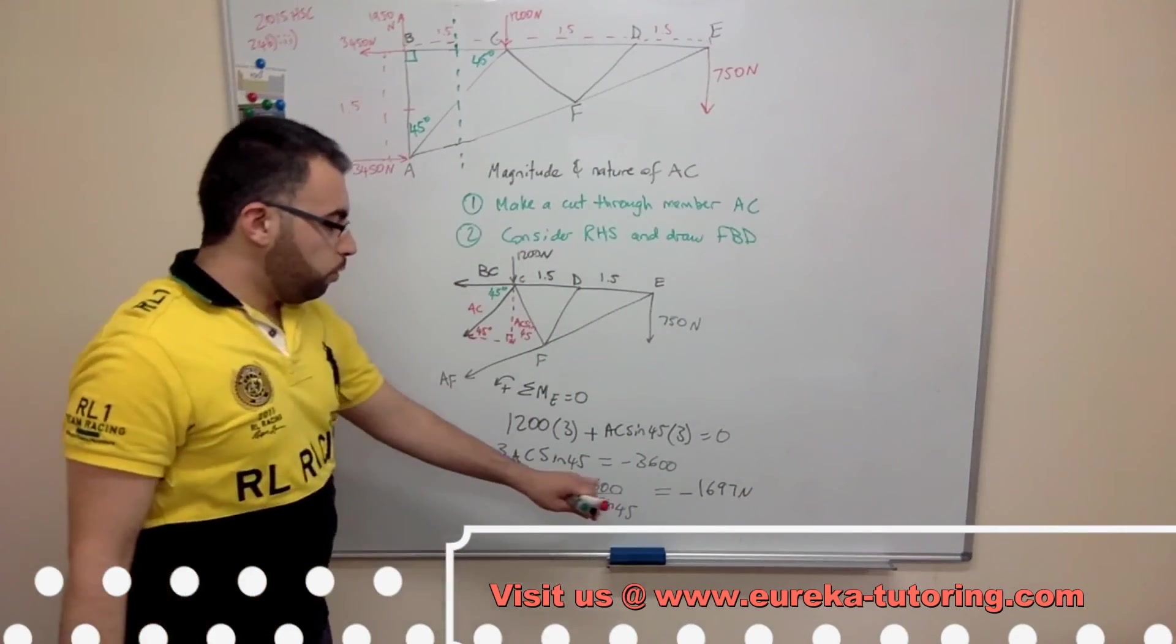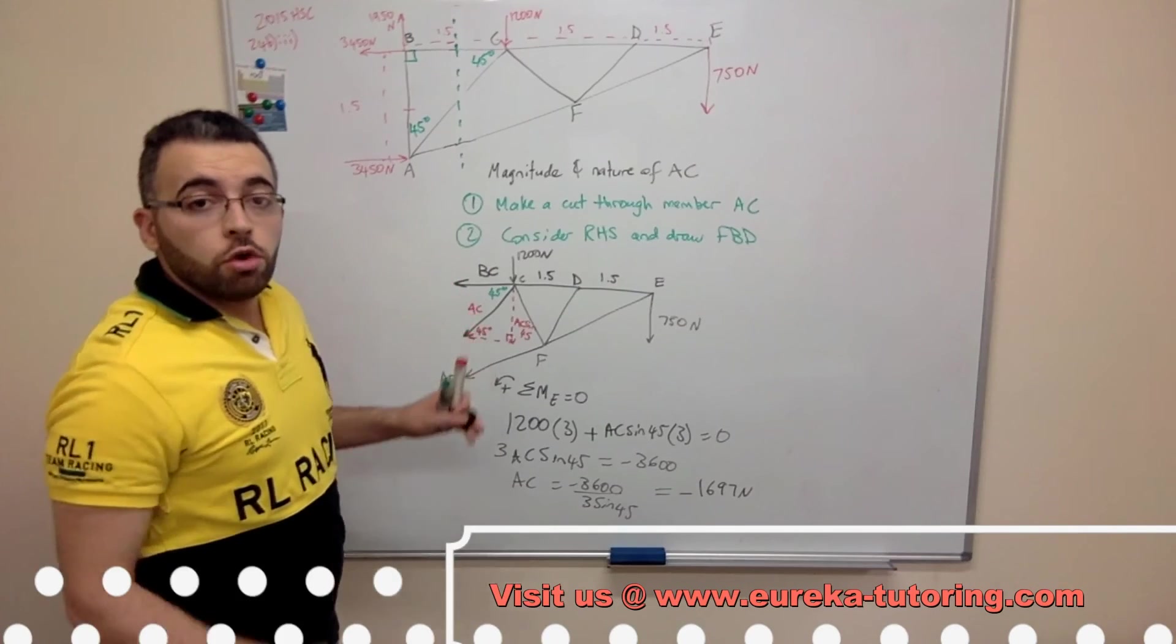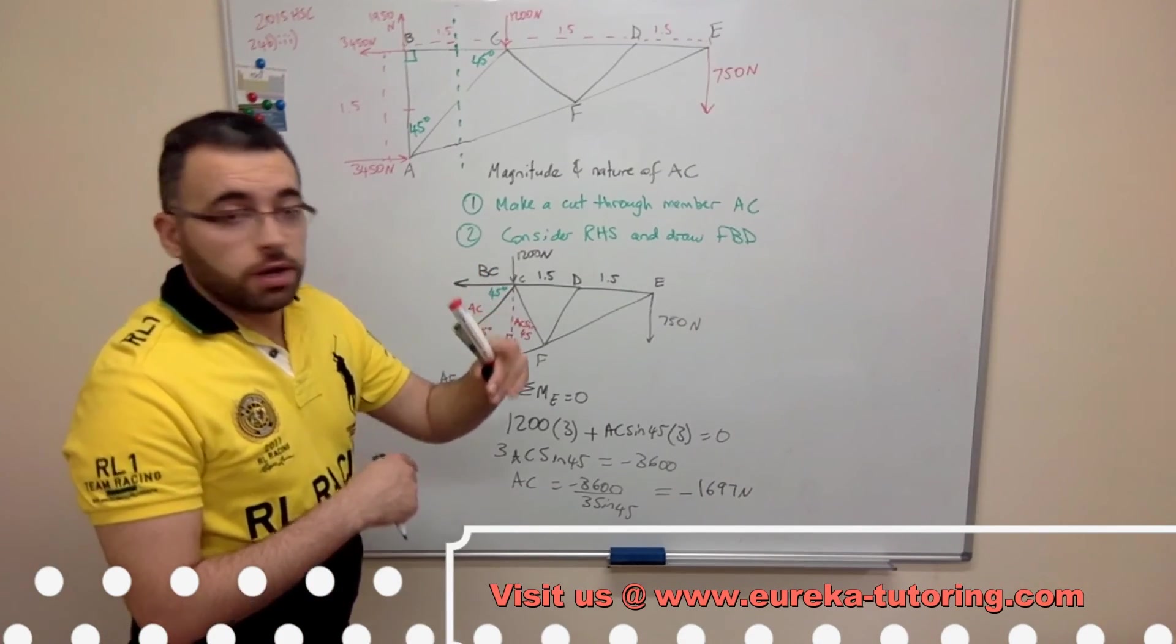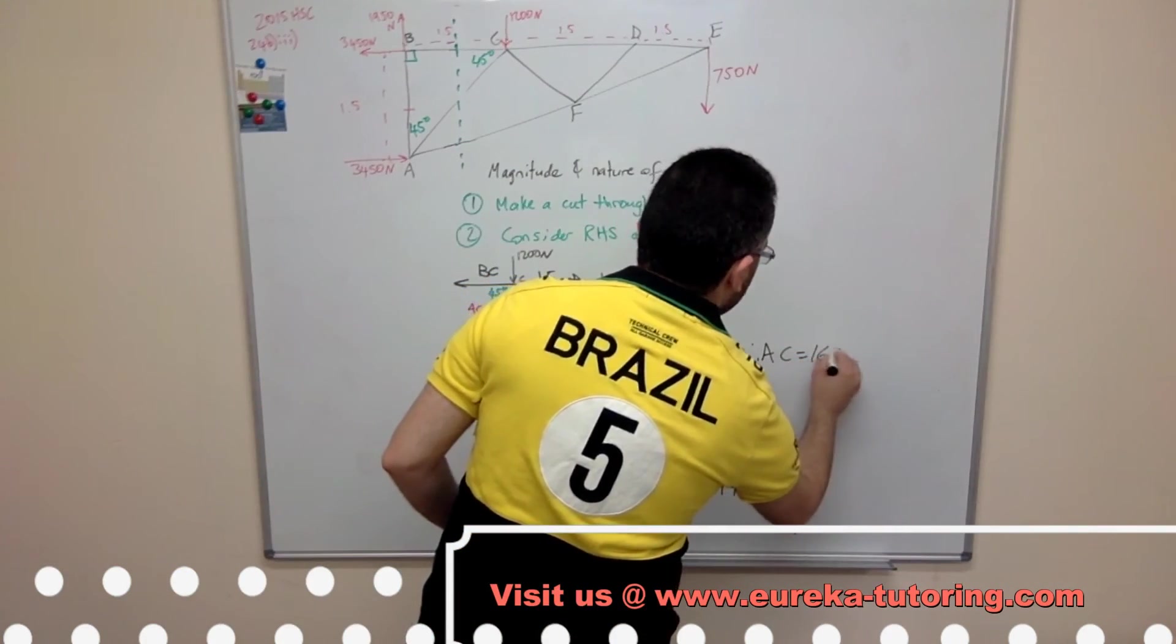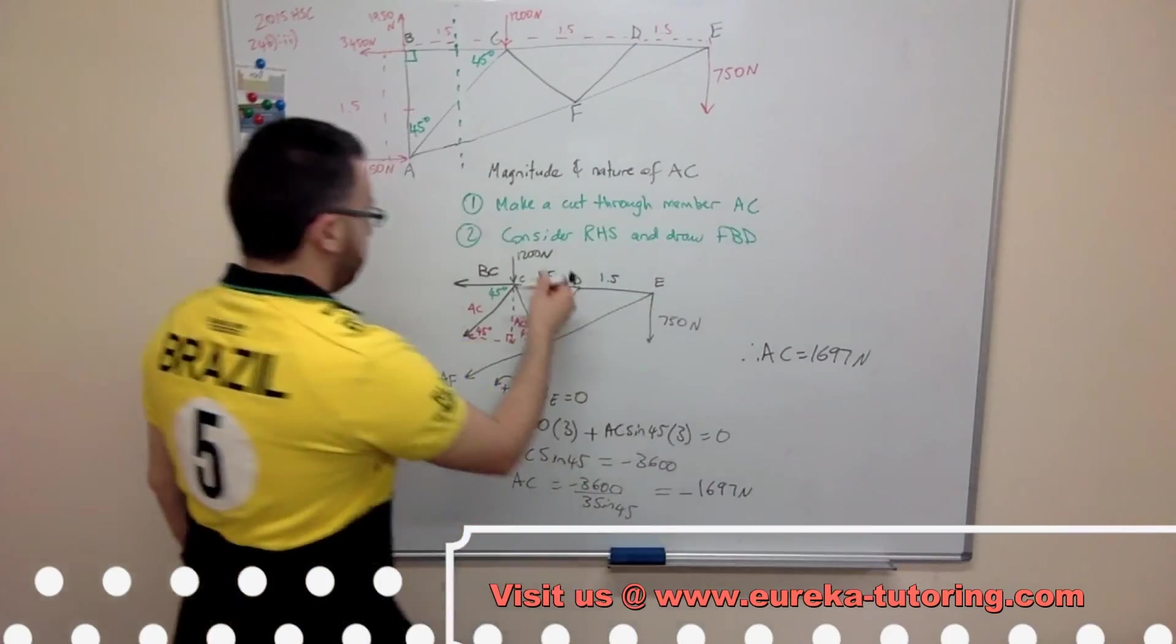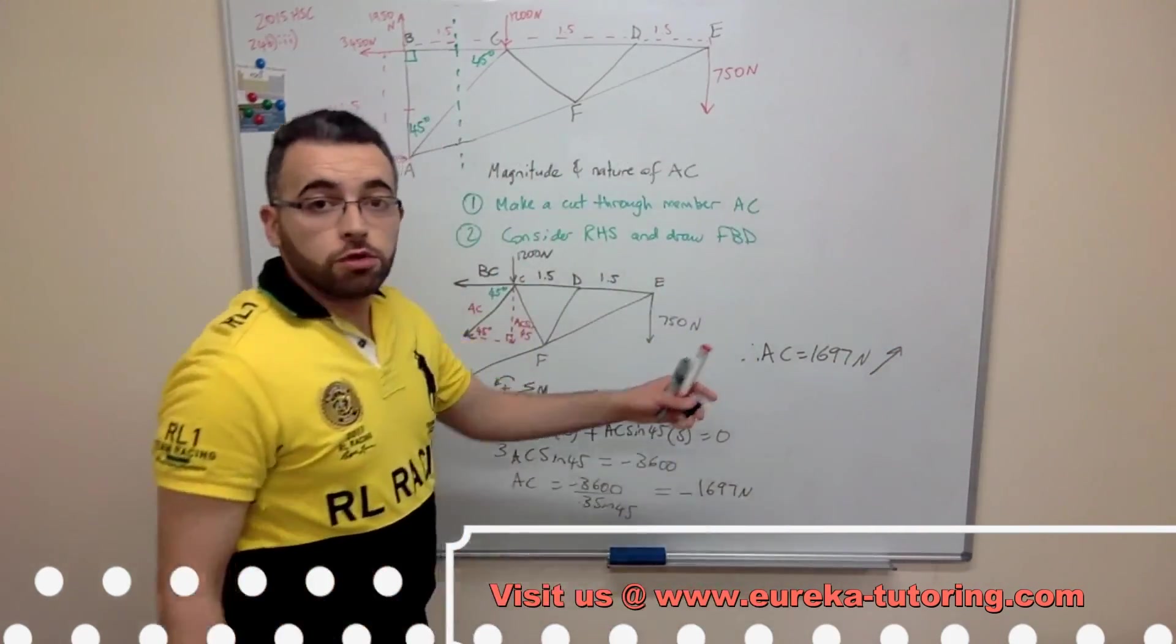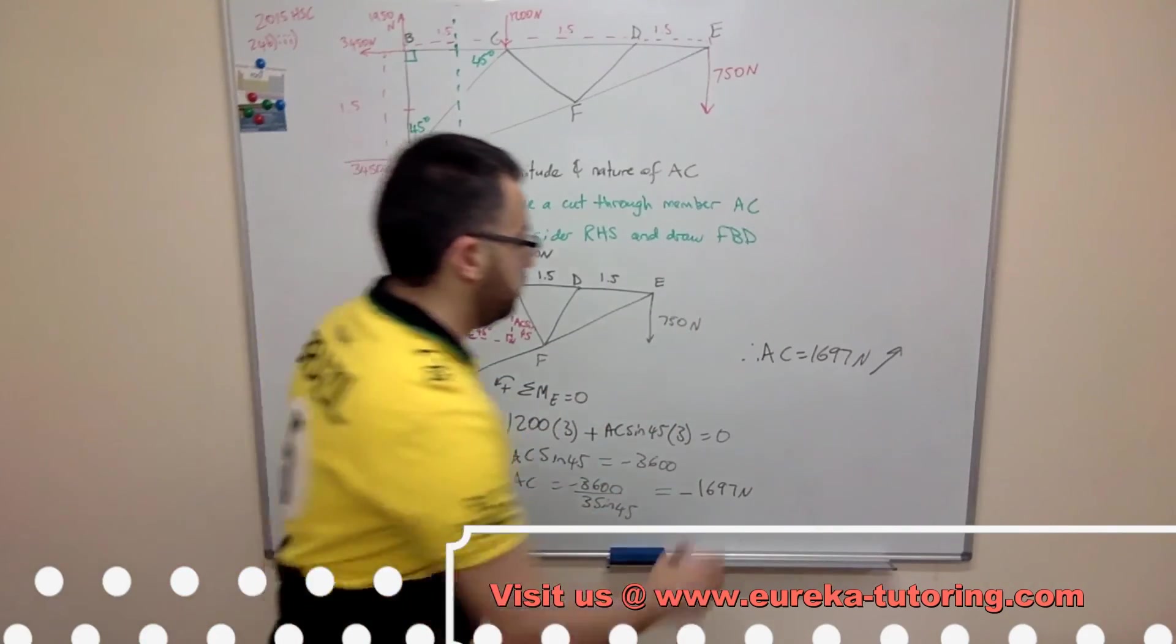Now, because we've got a negative value, that means we've assumed the direction incorrectly. So all we need to do is just change the direction in the opposite way. Therefore, AC equals 1697 newtons. Instead of going this way, it's now going that way. Now, because the force is going towards the joint, we consider that to be a compression force.